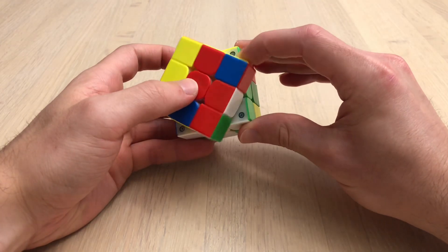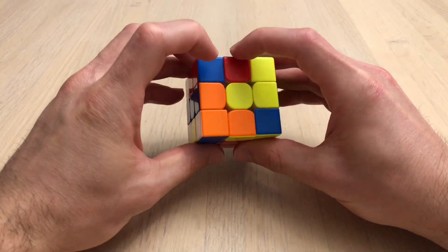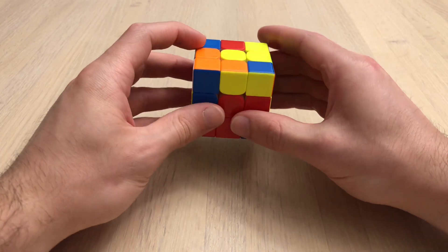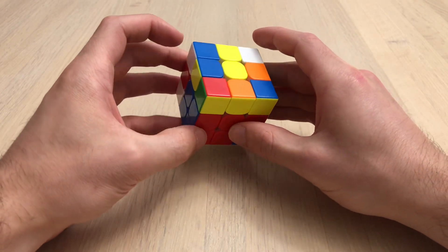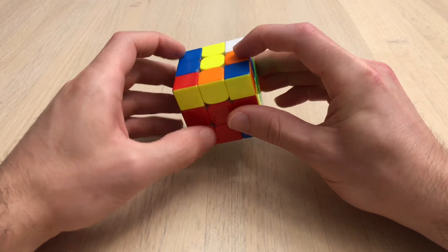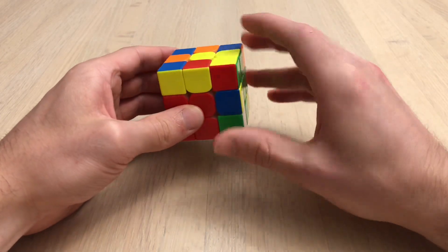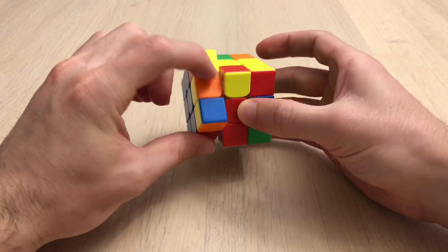I'll finish the cross and then right away go into this pair, separate them, pair them up, this corner, this edge, also insert it into the back.